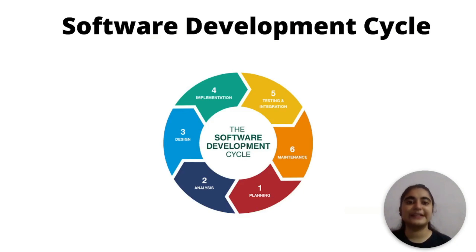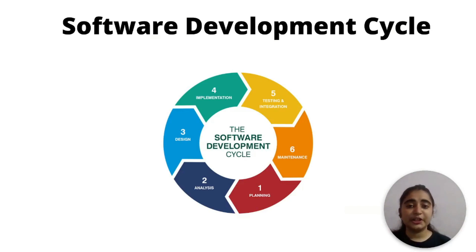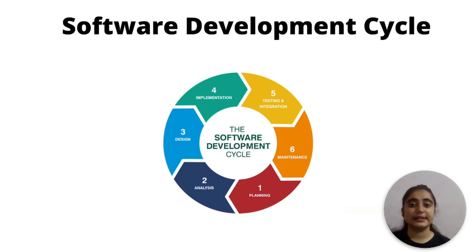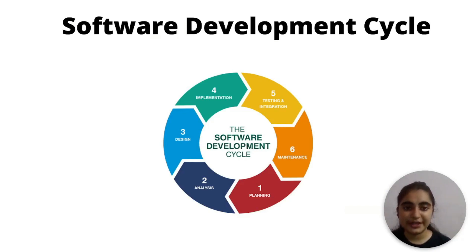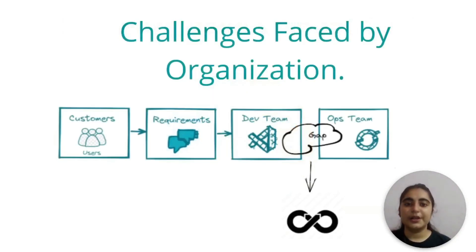This is the software development cycle. For a simple static NGO website it's manageable, but if we talk about full software products, it takes much more planning, analysis, and design — not just one or two web pages but many. Implementation is also not easy. For this reason, there are two departments in any organization to perform all these steps.